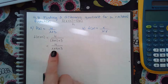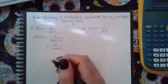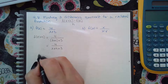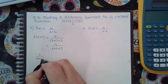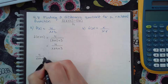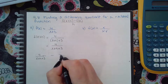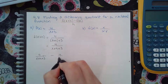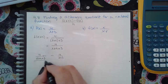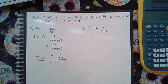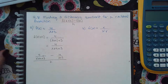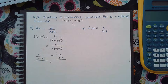From there, we're going to plug everything in — the expression for f of x plus h minus the expression for f of x, all over h. Remember, the goal is to cancel that h that's in the denominator, the big denominator.